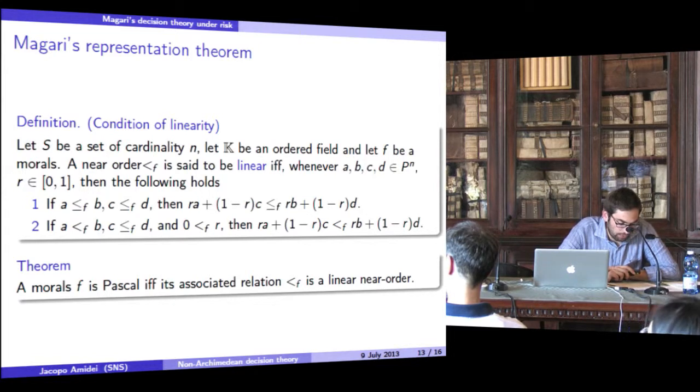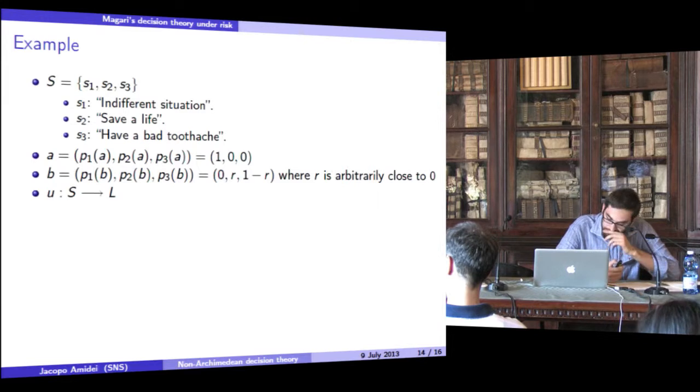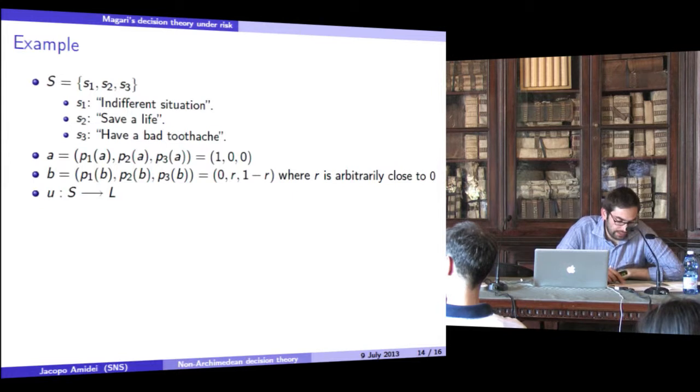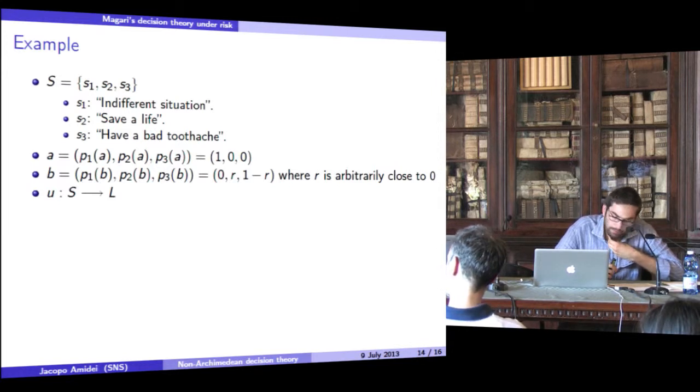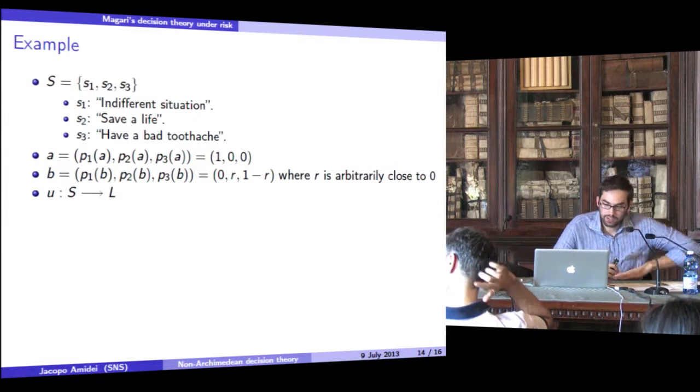Let's see an example of how decision theory developed by Roberto Magari considers the potential disastrous consequences of small probability. Suppose we have three situations: s_1 is an indifferent situation for the person who has to make the choice, s_2 is save a life, s_3 is a bad toothache. We have two acts: act A is described by the triple (1, 0, 0), and act B is described by the triple (0, R, 1 minus R), where R is arbitrarily close to 0.